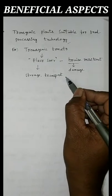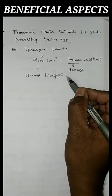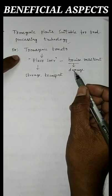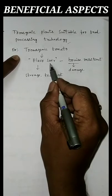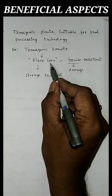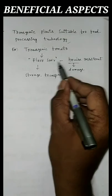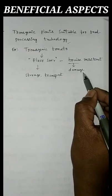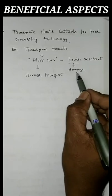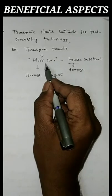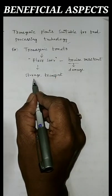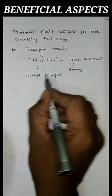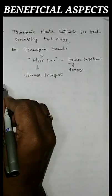In food processing technology, a transgenic tomato is produced which is called as Flavr Savr. This Flavr Savr is bruise resistant, meaning damage resistant. That is why this Flavr Savr is suitable for storage as well as transport.